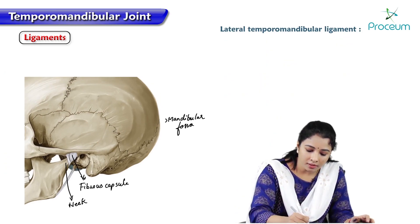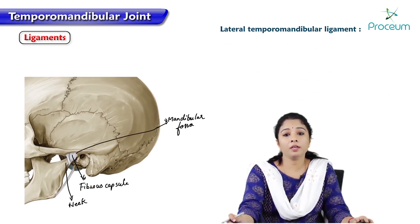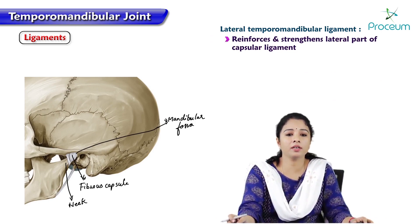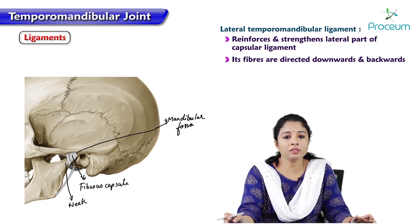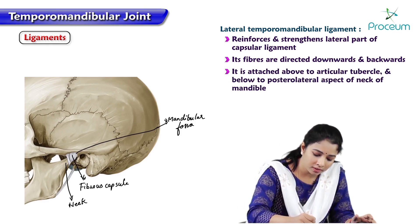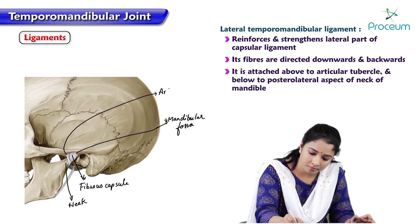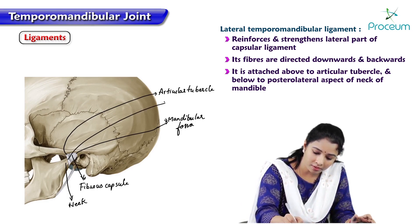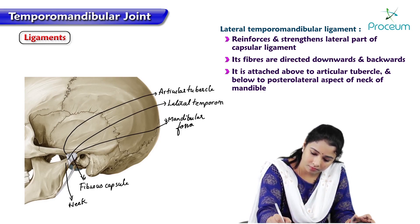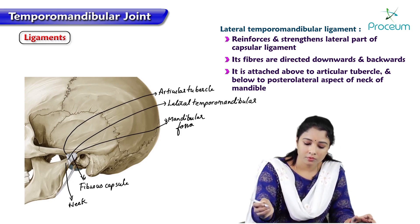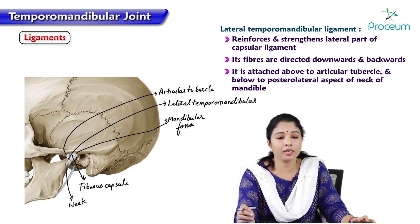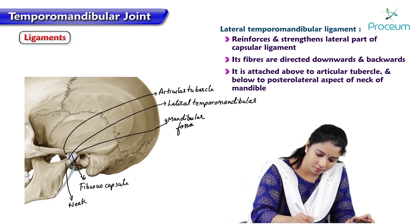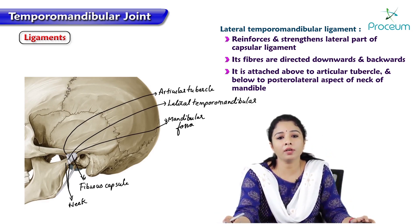The temporomandibular ligament reinforces and strengthens the lateral part of the capsular ligament. Its fibers are directed downwards and backwards. It is attached above to the articular tubercle and below to the posterolateral aspect of the neck of the mandible.